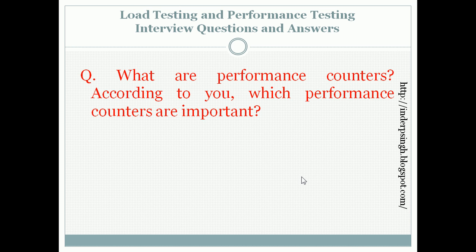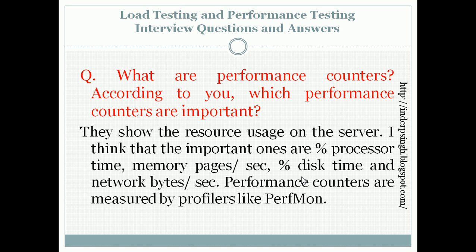The next question is: what are performance counters, and which are important? Performance counters show the resource usage on the server of the system under test. The important performance counters are: % processor time, memory pages per second, % disk time, and network bytes per second. During the load test, we must watch that performance counters do not reach very high percentages or max out, as that usually indicates performance issues. Performance counters are measured by profilers like Perfmon for Windows servers, and other profilers are available for other technologies.